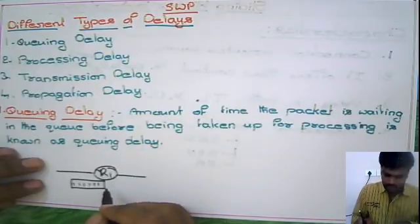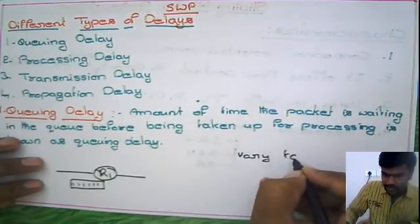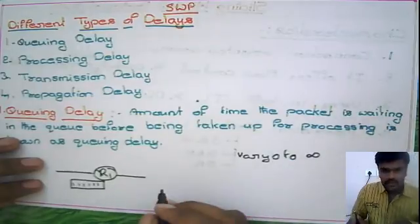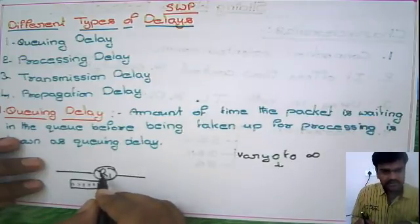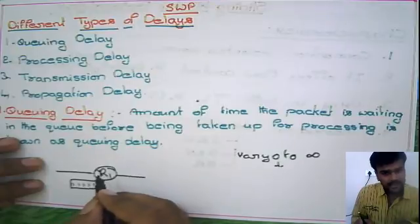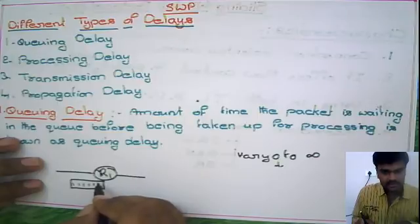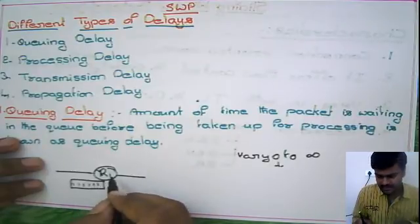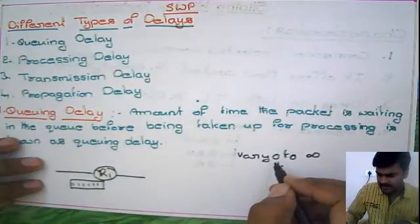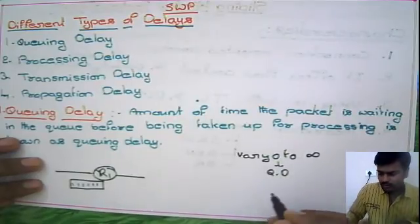This delay may vary from 0 to infinity. When is it 0? Suppose a packet arrives and the router is idle. In that case, the packet need not stay in the buffer because the router is idle — it will pick up that packet immediately after it reaches the router. So in that case, queuing delay becomes 0.